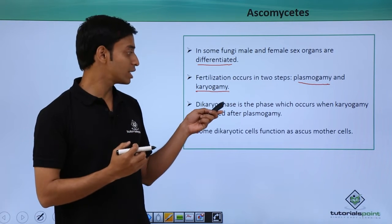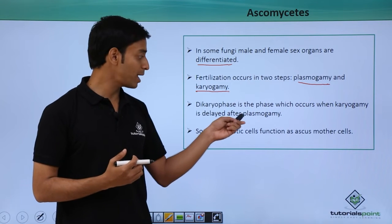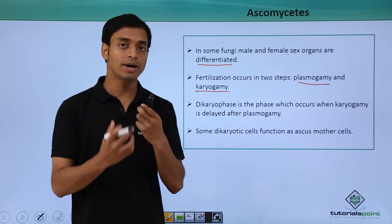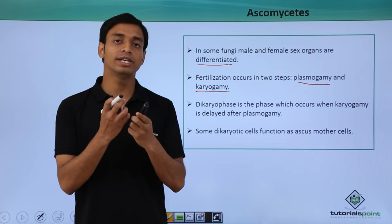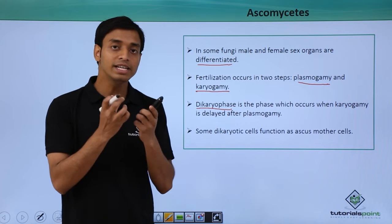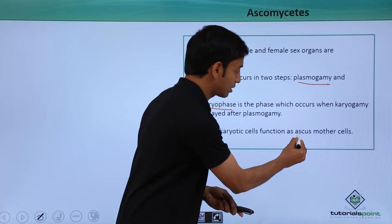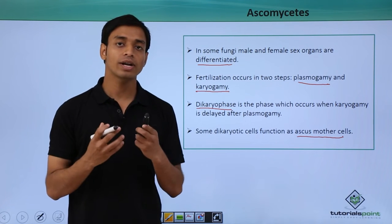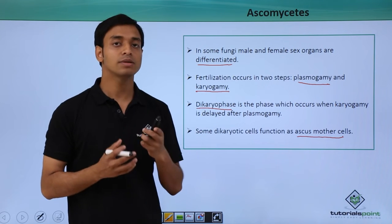In some cases, karyogamy is delayed after plasmogamy — meaning cytoplasmic fusion has occurred but is not immediately followed by nuclear fusion. This intermediate stage is known as the dikaryophase. Some of these dikaryotic cells can function as the ascus mother cell, which can later act as the site for both karyogamy and meiosis.